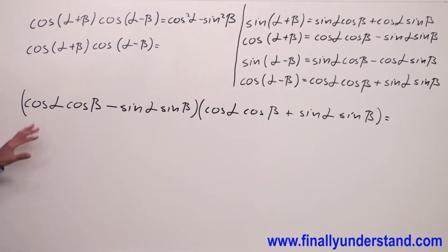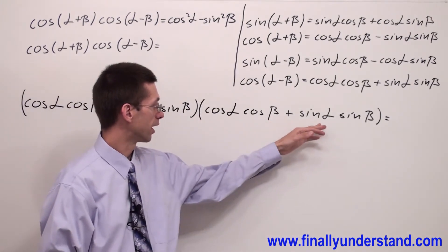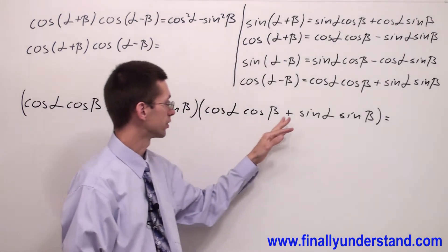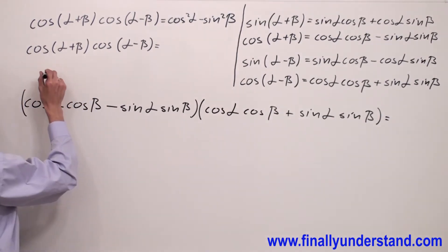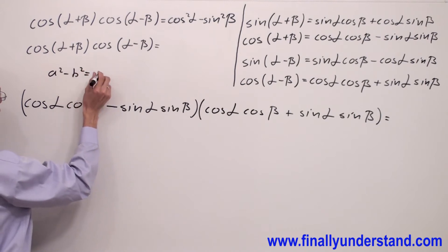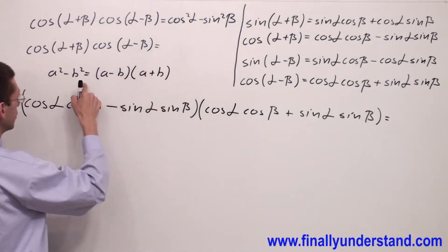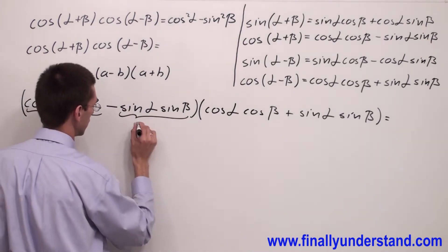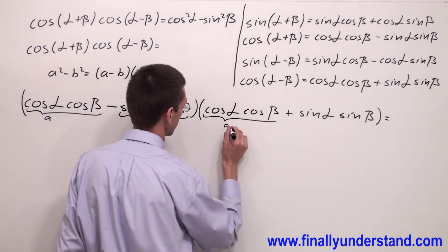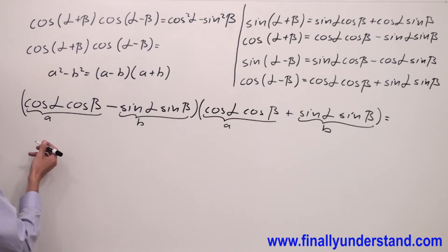Let's take a look at what we have in the parentheses. We have cosine alpha times cosine alpha, cosine beta times cosine beta, and sine alpha times sine beta with a negative sign and a positive sign. This is nothing else but the difference of two squares. Let me remind the formula one more time: a squared minus b squared equals (a minus b)(a plus b). You have to remember this formula. Here cosine alpha cosine beta is my 'a', and sine alpha sine beta is my 'b'.